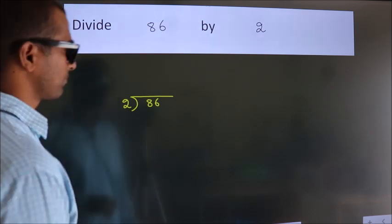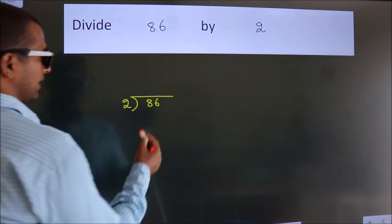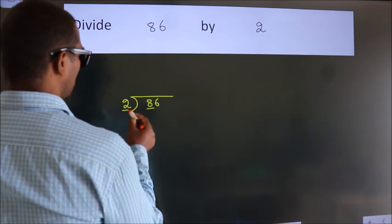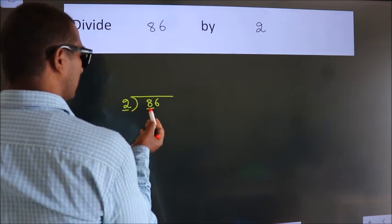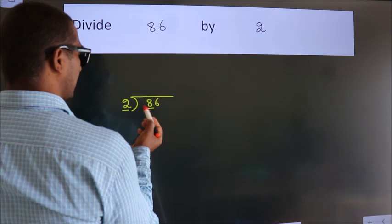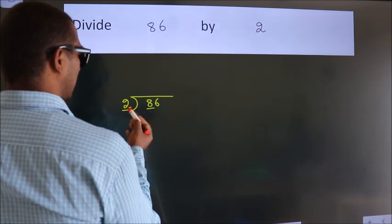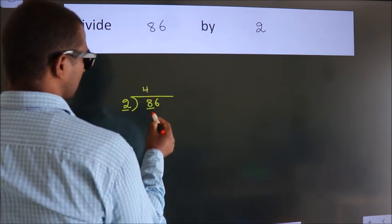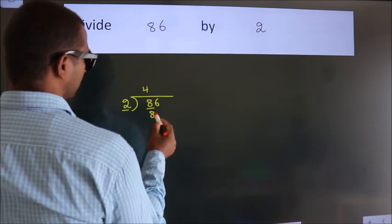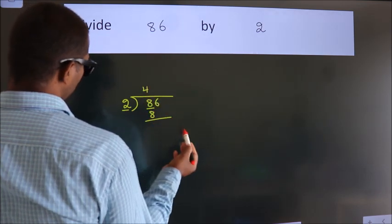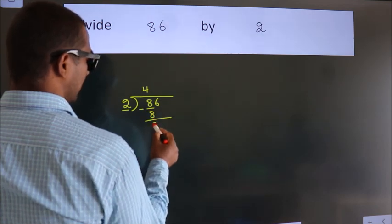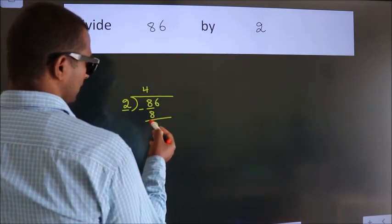Next, here we have 8, and here 2. When do we get 8 in the 2 table? 2 fours are 8. Now we should subtract. We get 0.